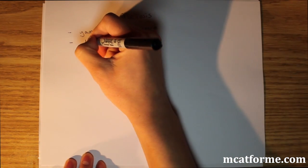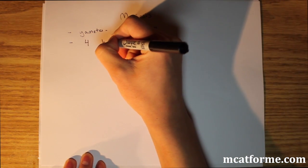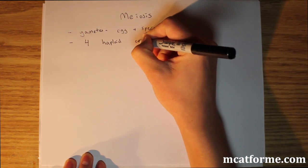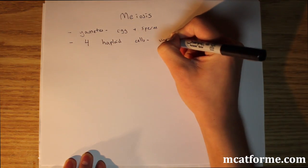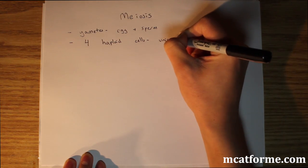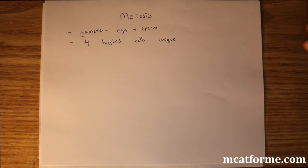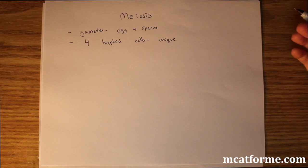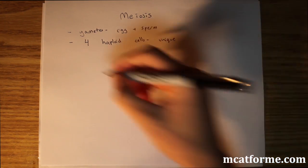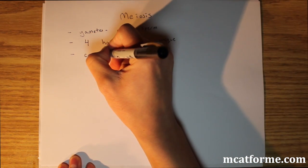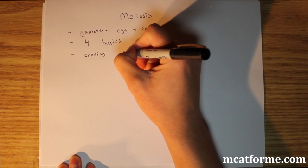Meiosis is going to produce four haploid daughter cells, and they're going to be unique — not all the same, and not just like the parent. There's a very good chance they won't be, due to crossing over. So another key point is that there's crossing over and recombination.